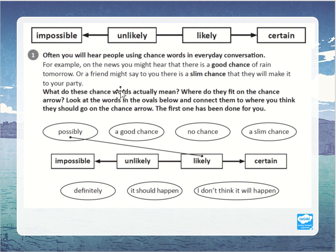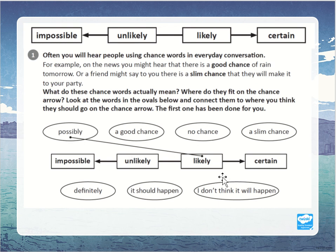Have a think about what these chance words actually mean and where they fit on the chance arrow. Look at the words in the ovals below and connect them to where you think they should go on the chance arrow. The first one's done for you — 'possibly' has been connected to 'likely' — then you can pause this video and see if you can do it yourself.